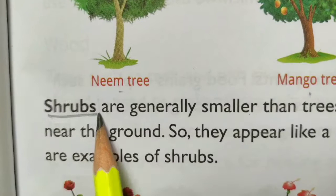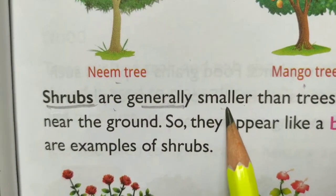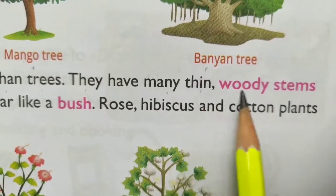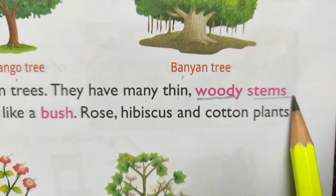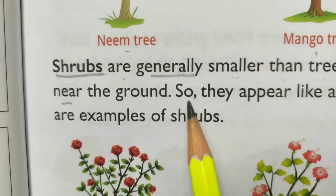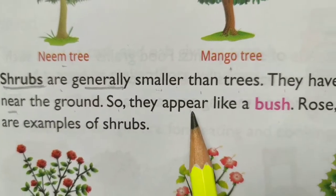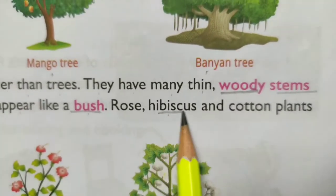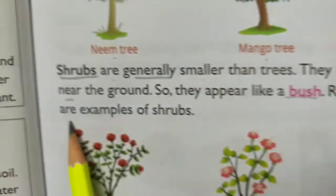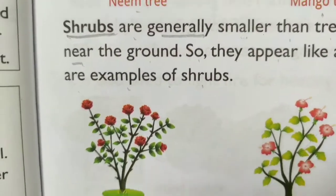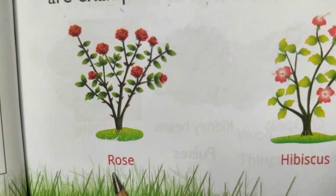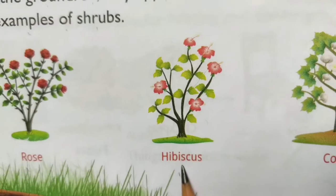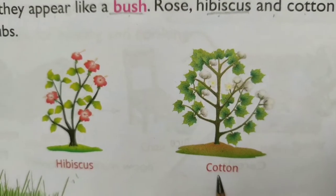Shrubs are generally smaller than trees. They have many thin woody stems near the ground, so they appear like a bush. Rose, hibiscus and cotton plants are examples of shrubs. This is a rose plant, this is a hibiscus plant and this is the cotton plant.